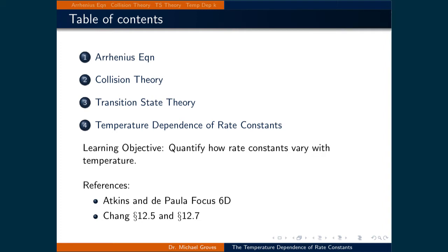In the first part we will introduce the Arrhenius equation. In the following two parts we will discuss two theories used to describe how to quantify reactions: collision theory and transition state theory, and relate them to the Arrhenius equation.